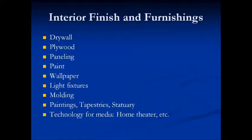Next, you get into interior finish and furnishings — that's any host of items such as drywall, plywood, paneling, paint, wallpaper, light fixtures, molding, tapestry, statuary, and technology for media including home theater. All these things are different types of items and will be based on the client's needs and the architect's choices based on those needs.